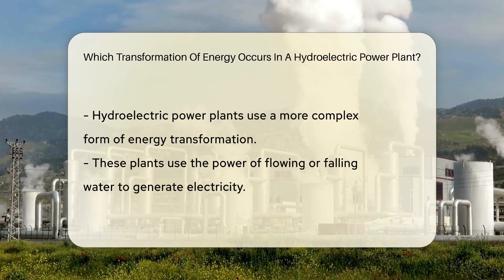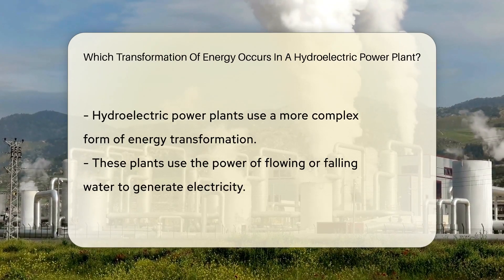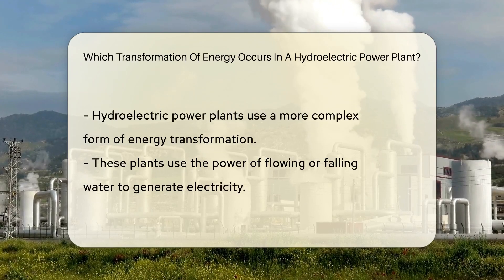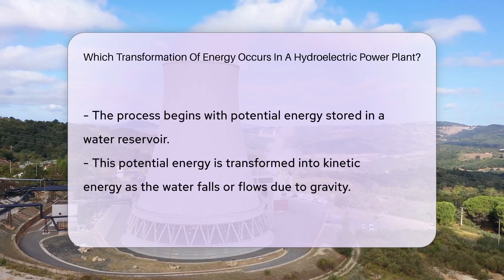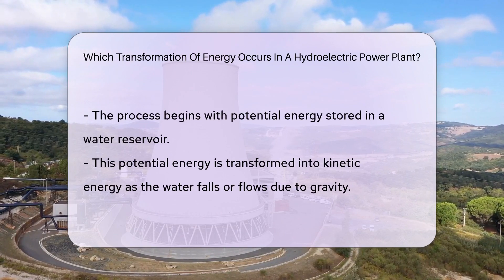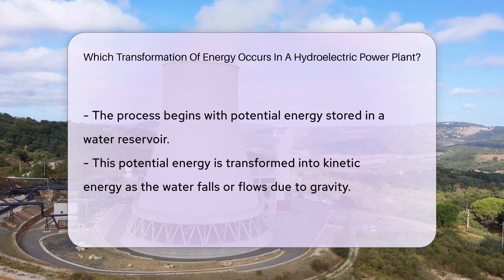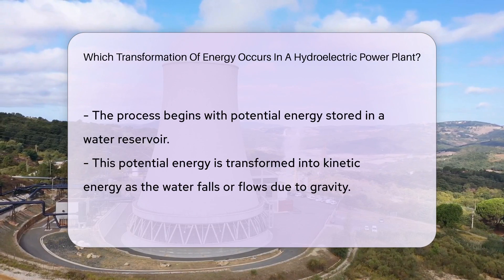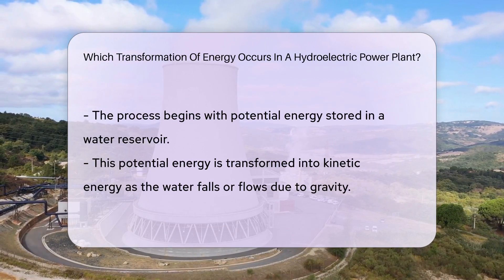In the case of hydroelectric power plants, the transformation is a little more complex. These plants harness the power of flowing or falling water to generate electricity. Here's how it works: potential energy stored in a water reservoir is transformed into kinetic energy as the water falls or flows due to gravity.